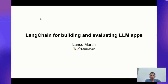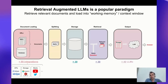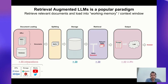Thanks for having me. I'll talk a bit about LangChain, which is a framework for building language model applications. One of the popular paradigms here is retrieval-augmented LLMs, where we retrieve documents from some source, put them in the working memory of an LLM, and produce answers. LangChain has over 80 integrations for document loading, over 30 for storage and different vector stores, over 30 for retrieval, and over 40 different LLMs.